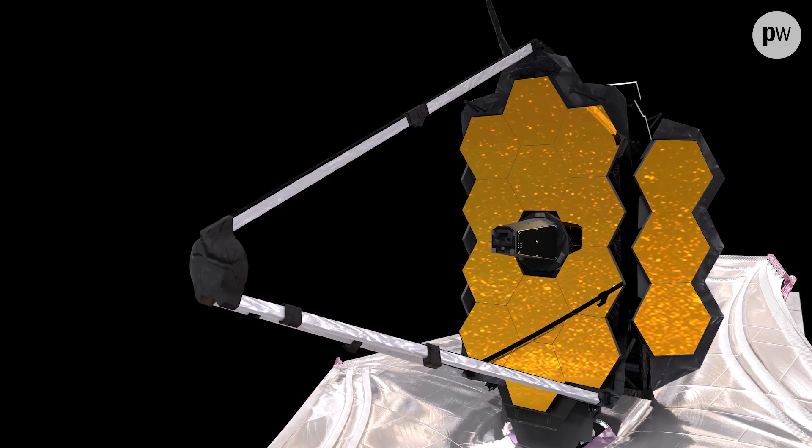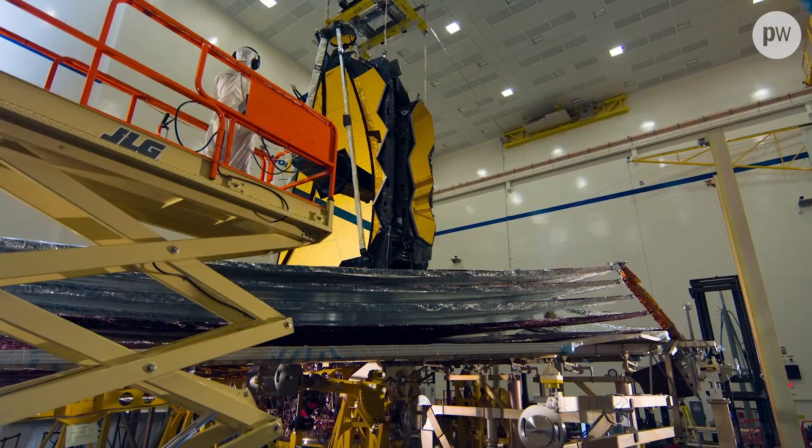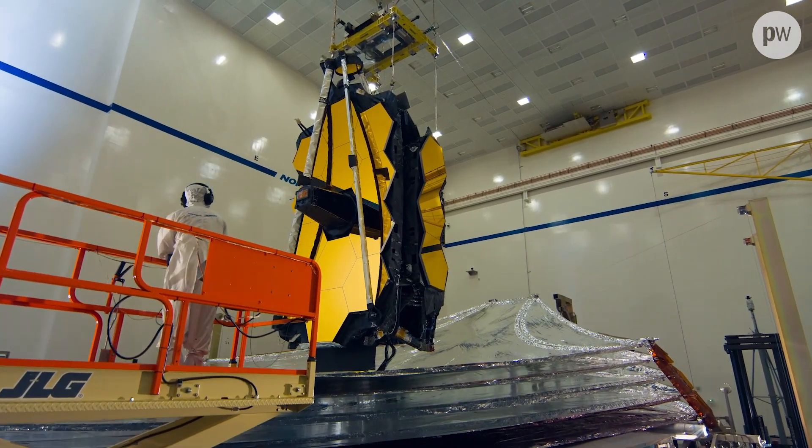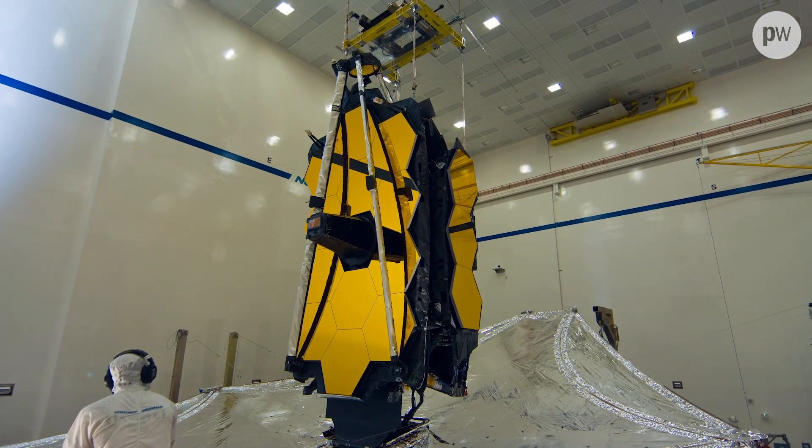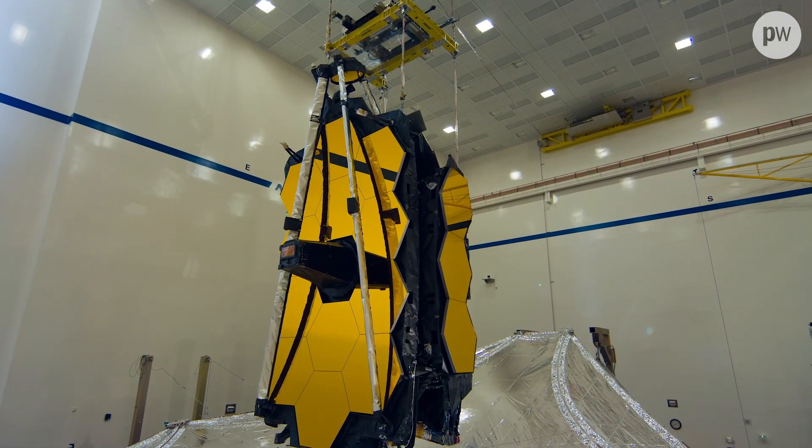Then came the process of unfurling the telescope's primary mirror system. The gold-coated structure has a whopping 6.5-meter diameter comprising 18 individual mirror segments. It was folded to fit inside the nosecone of the launch rocket.